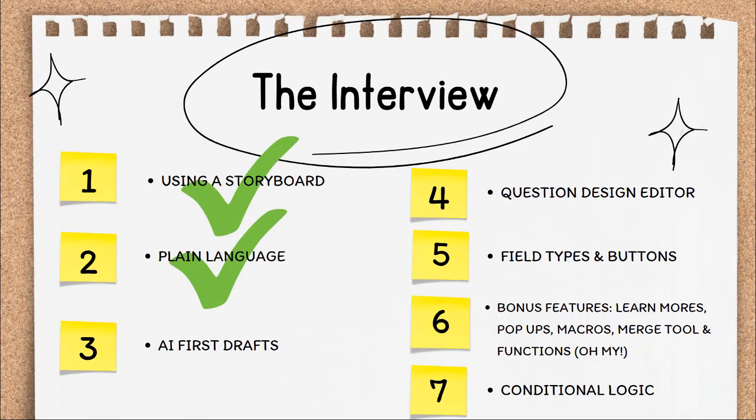That is the end of the plain language lesson. You should now understand why plain language is important, especially when creating automated forms for self-represented litigants. You should have concrete steps for creating plain language A to J guided interviews, and know about the tools both within A to J Author and outside of it to evaluate your project's readability.